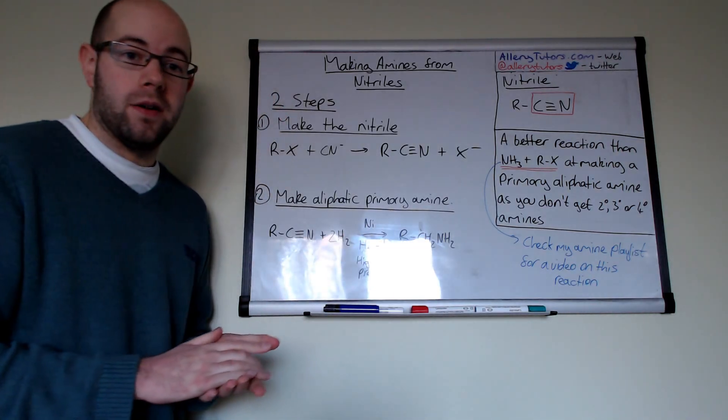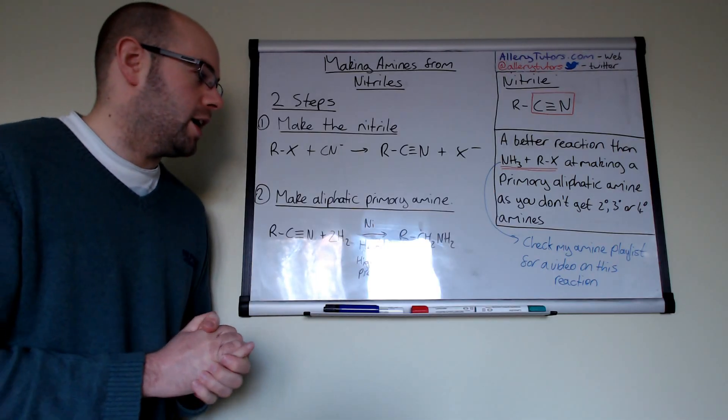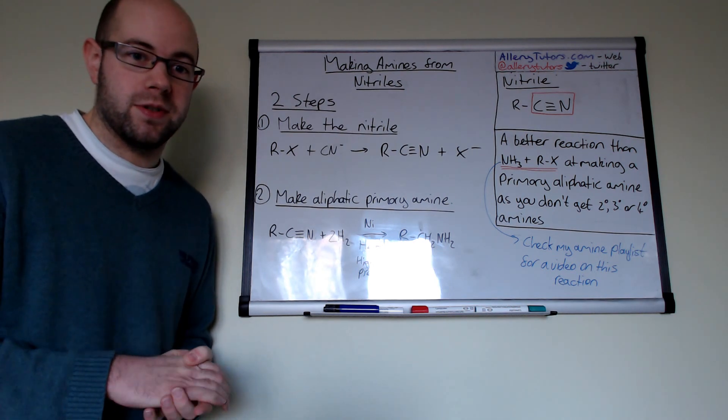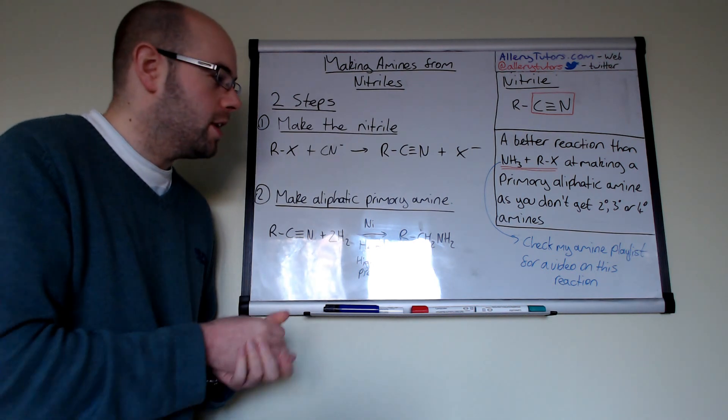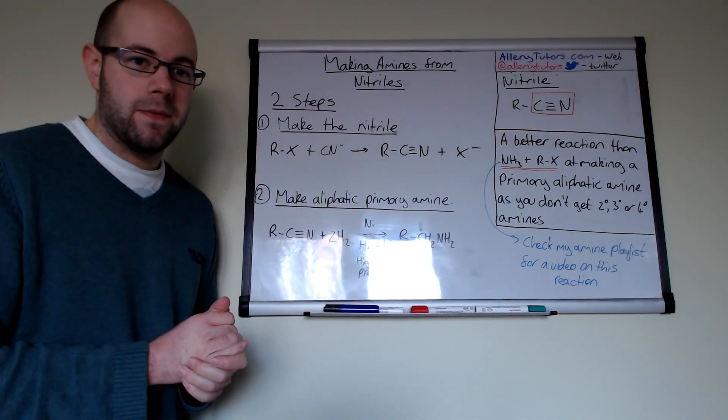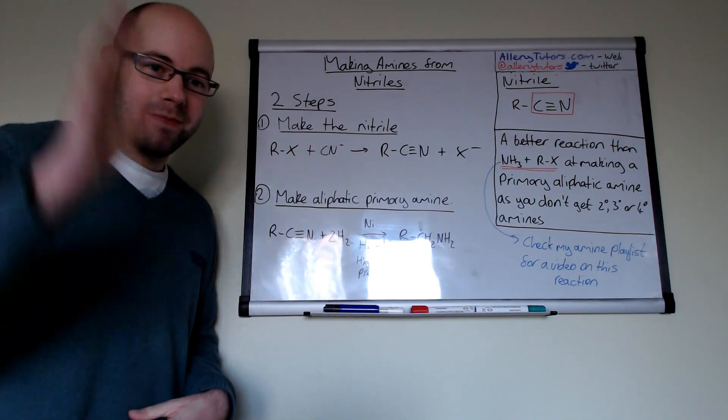Amines are useful for a multitude of things, you can make dyes from them and you can react that further to make quaternary salts which are used in fabric softeners etc so they do have a lot of use and so industrially they are economically viable anyway as a product but that's it that was going to be short hope that helps. Bye.